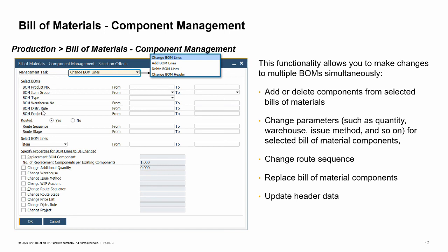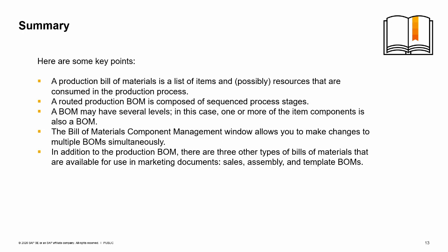A production bill of materials is a list of items and, possibly, resources that are consumed in the production process. A routed production BOM is composed of sequenced stages, where each stage has a header and components that have the same root sequence number. A BOM may have several levels — in this case one or more of the item components is also a BOM. The bill of materials component management window allows you to make changes to multiple BOMs simultaneously. In addition to the production BOM, there are three other types of bills of materials available for use in marketing documents: sales, assembly, and template BOMs. You have completed the topic bill of materials. Thank you for your time.